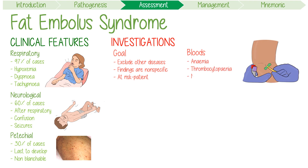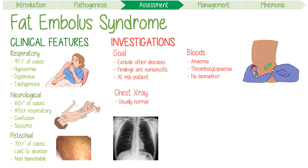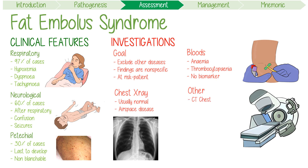Blood tests might show anemia and thrombocytopenia. Keep in mind that there are no specific biomarkers that have been validated for this disease. In terms of imaging, chest x-ray is usually normal, although a minority might show airspace disease due to edema or alveolar hemorrhage. Other imaging might include a CT chest, but again they're usually normal, though they can show ground glass opacities.